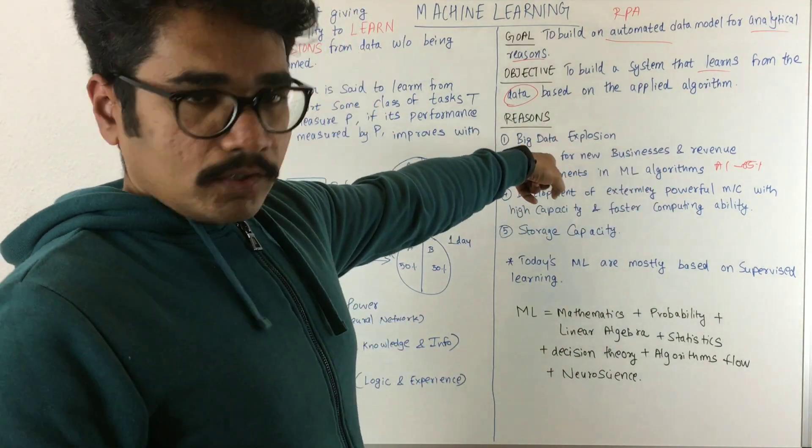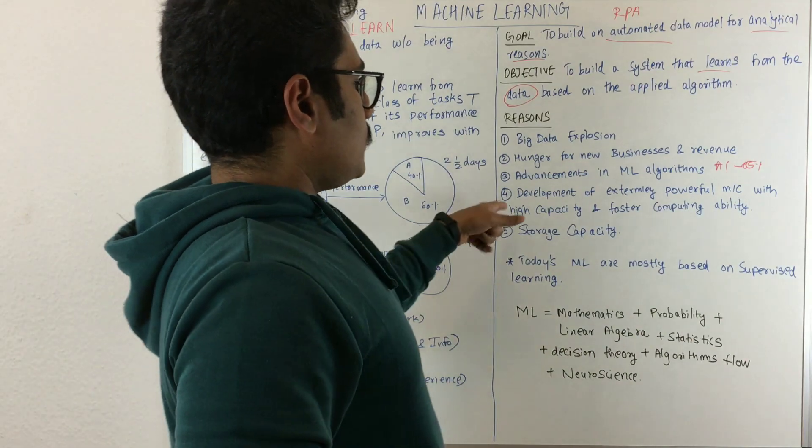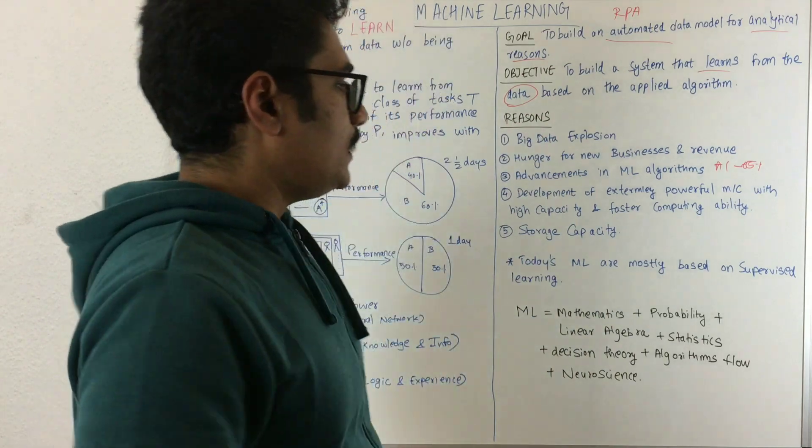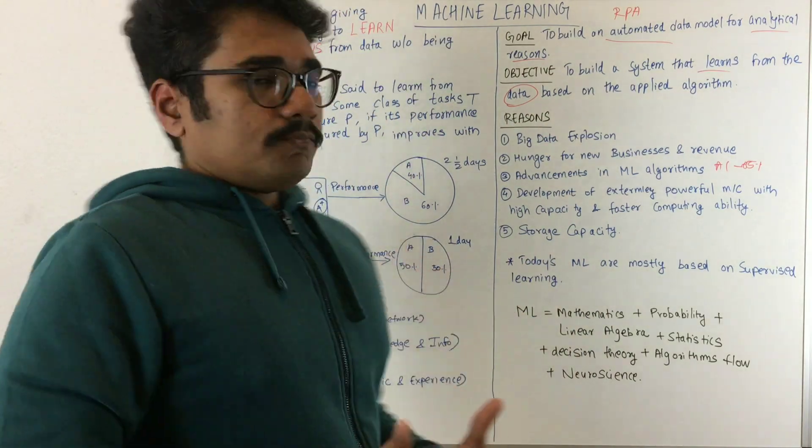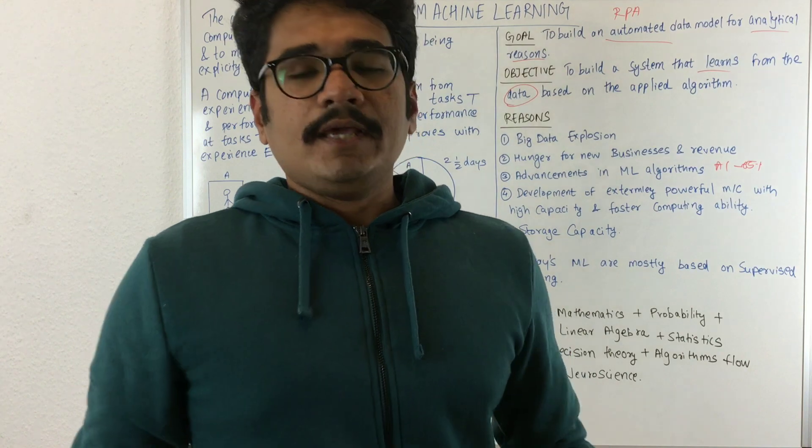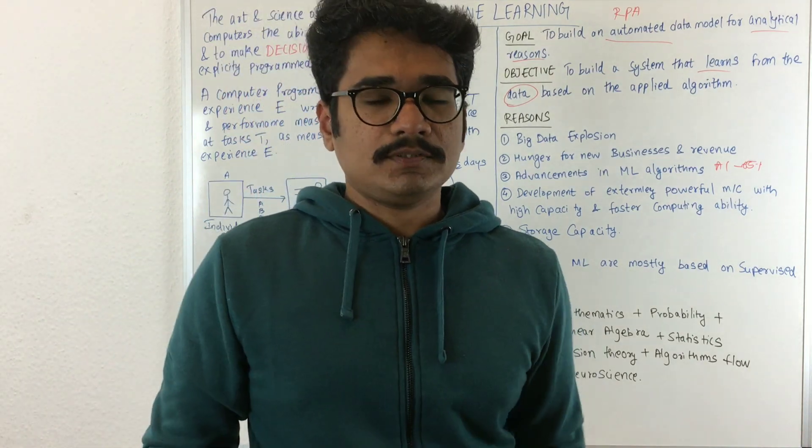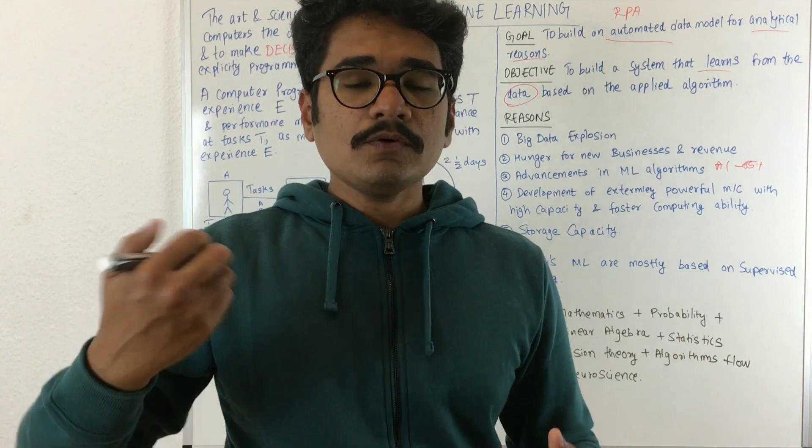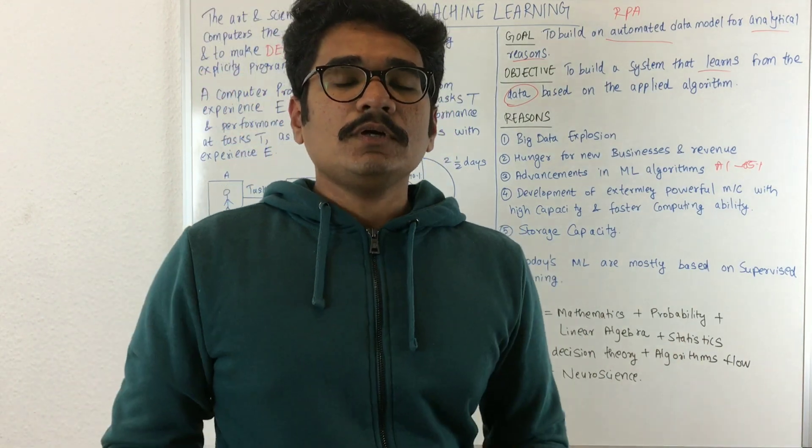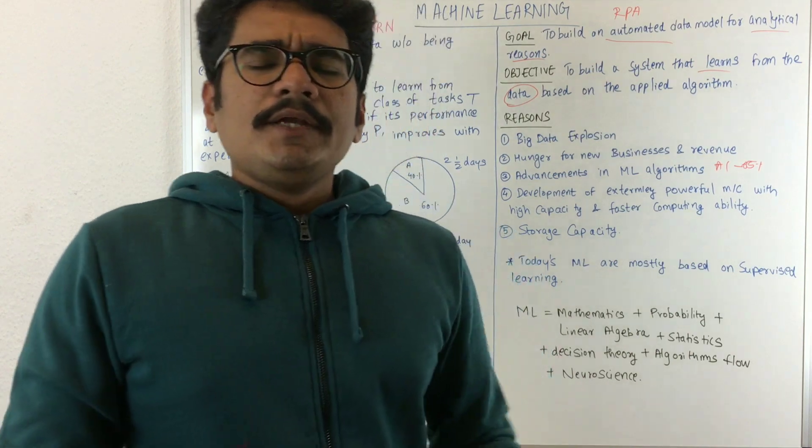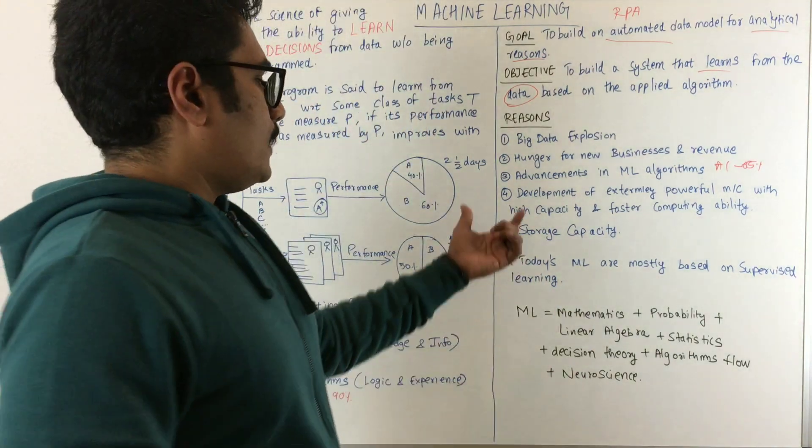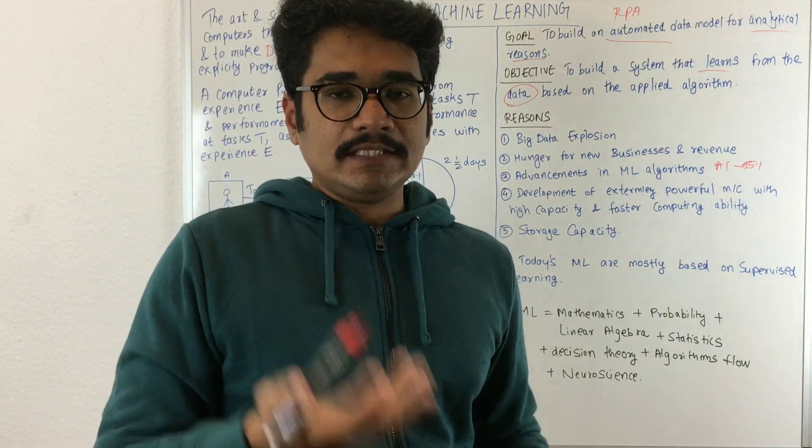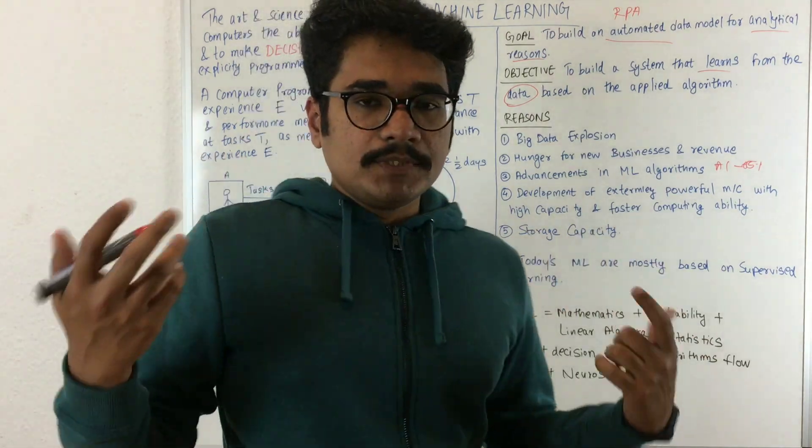This is done to operate on big data. Next, you have the development of extremely powerful machines with high capacity and faster computing ability. All of us require very high efficient machines to process. Obviously, there should be machine learning algorithms which learn what the user is interested in and perform accordingly, doing work in minimal time.